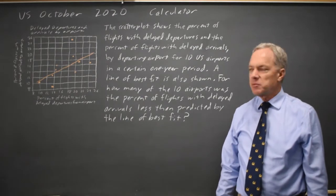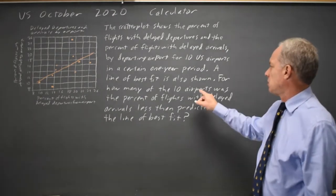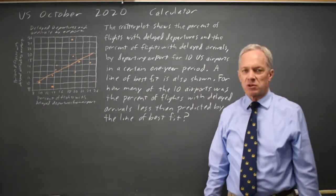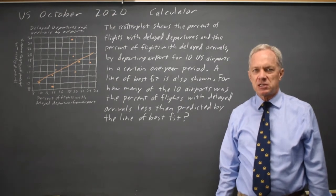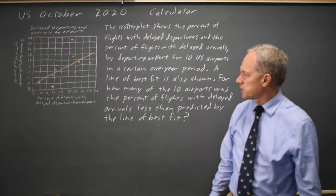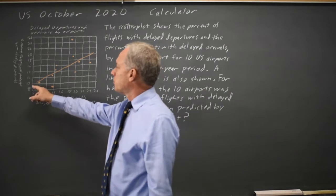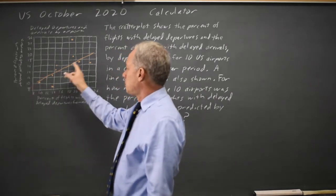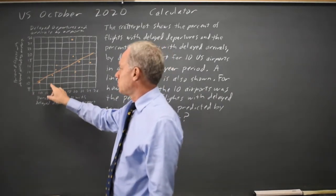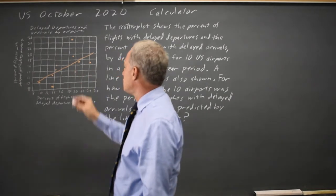And they ask for how many of these airports was the percent of flights with delayed arrivals less than predicted by the line of best fit. So that's how many of them have the Y value below the line of best fit and that would be one, two, three, four, five, six.